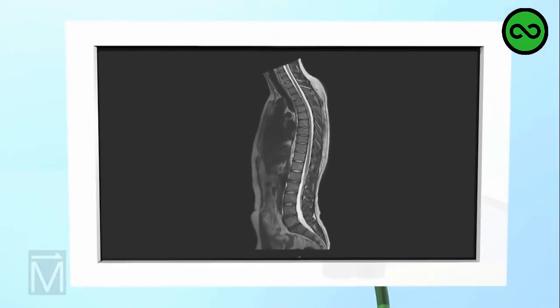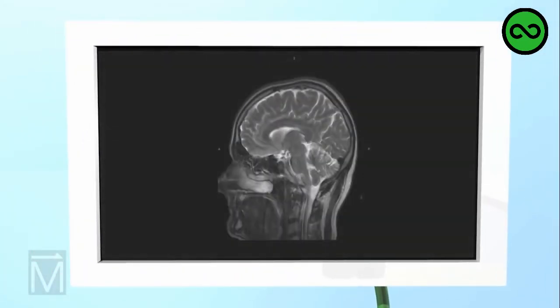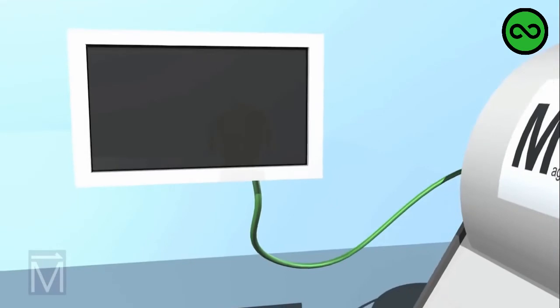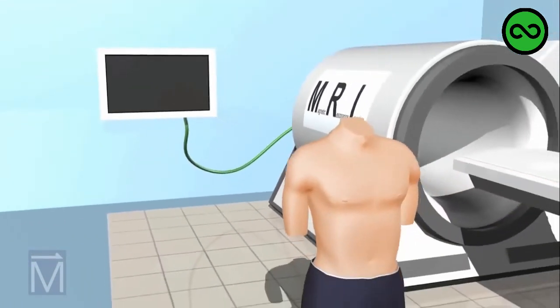MRIs can be used to scan the brain, joints, and other parts of the body in order to highlight abnormalities, such as herniated vertebral discs, cancer, stroke, broken ligaments, and aneurysms.